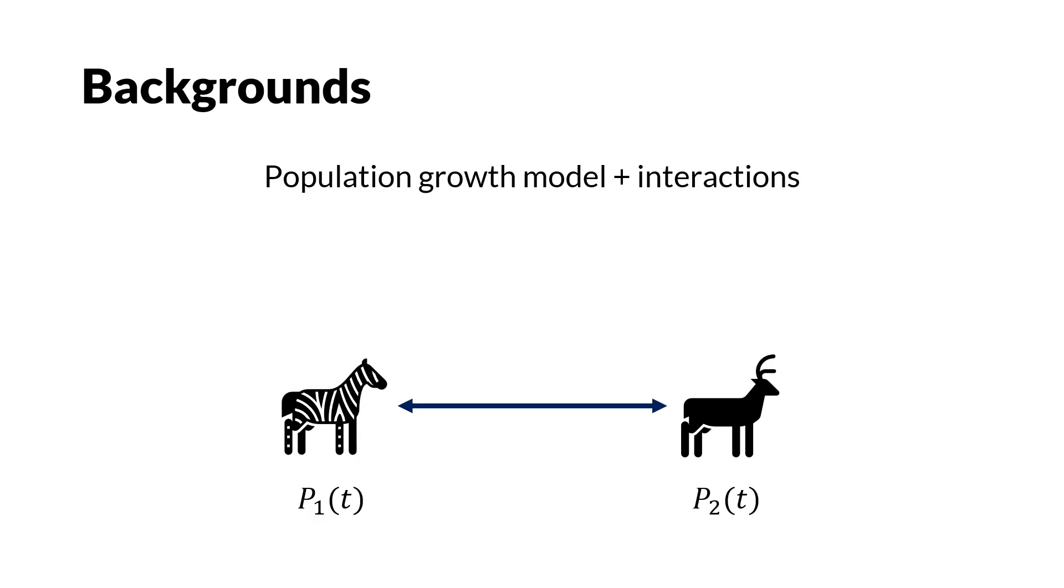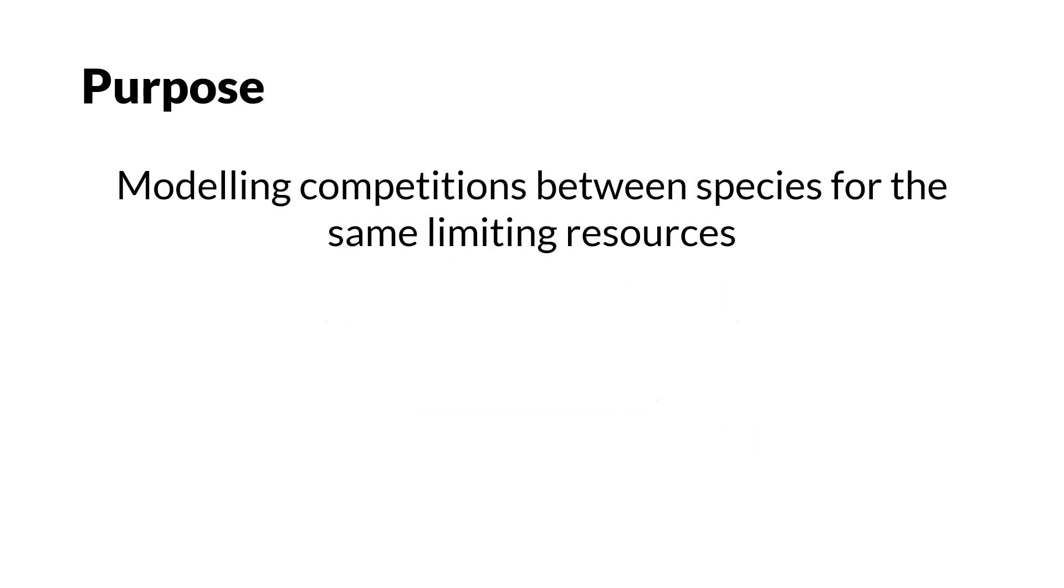There is also other population species that could affect these populations, for example the lions as their natural predator. The interactions are called predator and prey interactions and we will discuss it in the next video. So the purpose of this model is to add competition factor for population growth.